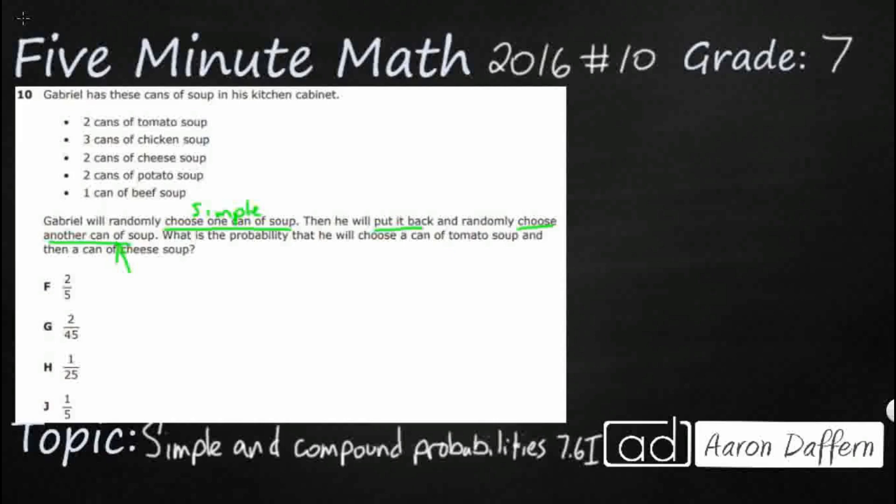He puts it back, so that's going to help because our denominator is not going to change when we're looking at how many total cans of soup we have. And then he randomly chooses another can of soup. So this is another simple event here. So what is the probability that he will choose a can of tomato and then a can of cheese? In that order. But look what happens. If you take a simple and a simple, guess what that makes? Now we have a compound event.